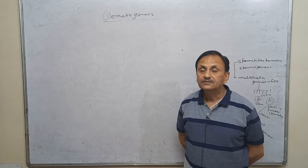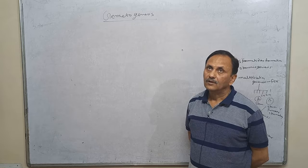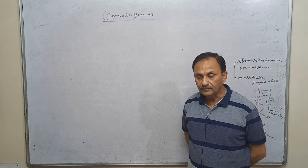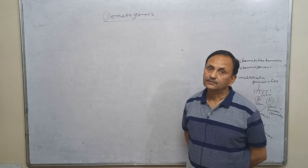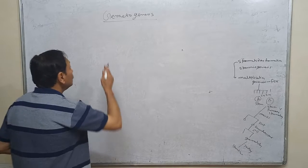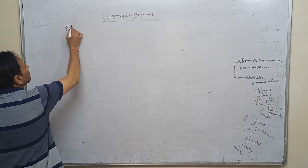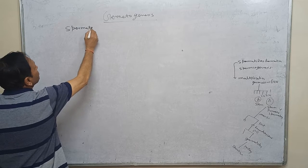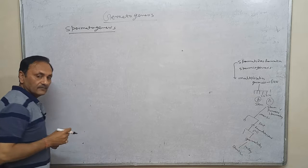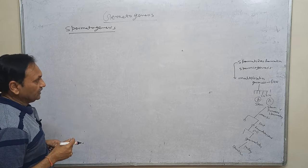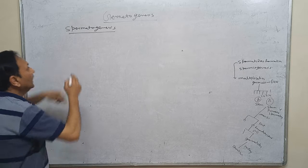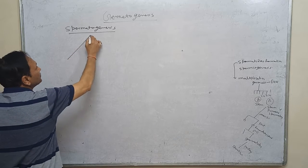Puberty is the age of maturation when a human being is in condition to reproduce. Firstly we will discuss male gametogenesis, that is called spermatogenesis. Spermatogenesis means formation of sperm.